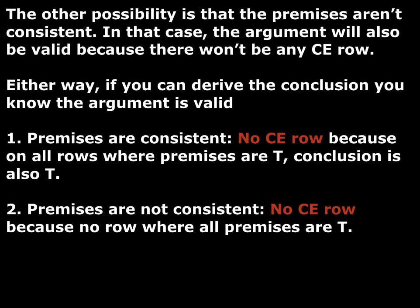To summarize: if you can derive the conclusion from the premises using truth-preserving rules, then you know the argument is valid — whether the premises are consistent or not. That's it for this video. The next couple of videos will introduce more rules and also fine-tune the proof method, being very clear on some things you shouldn't do and some things you can do.